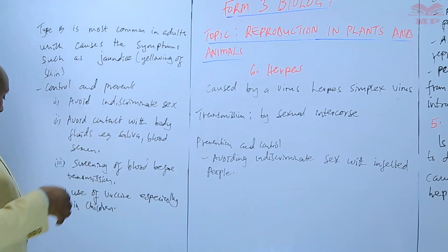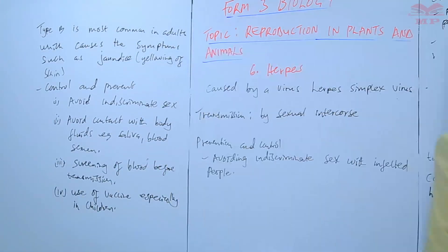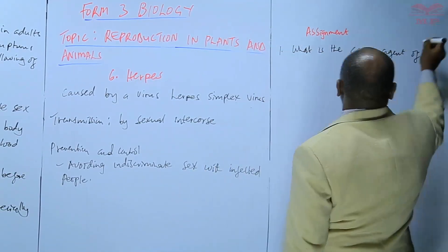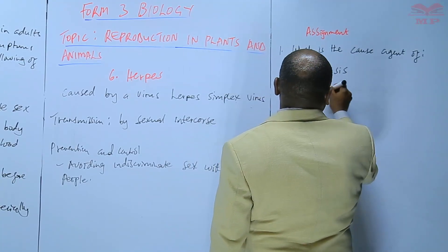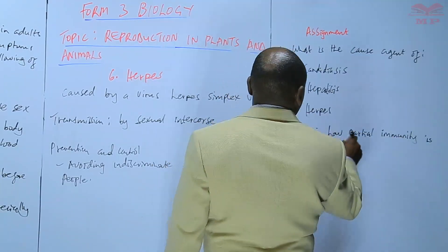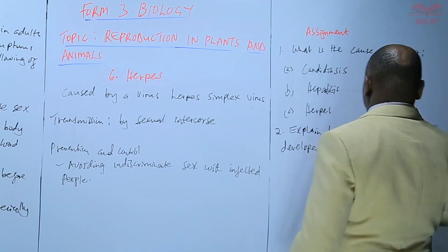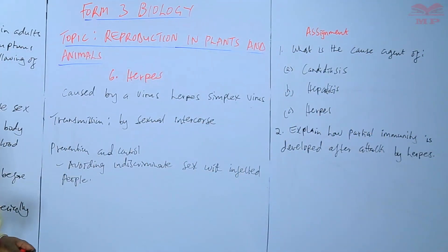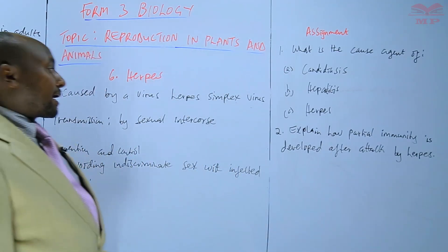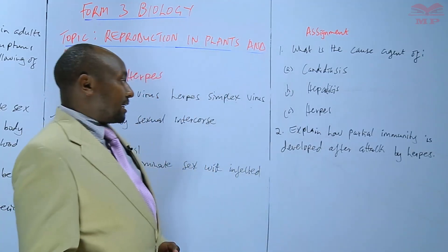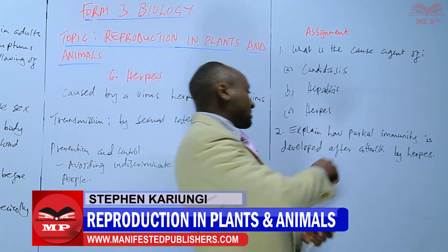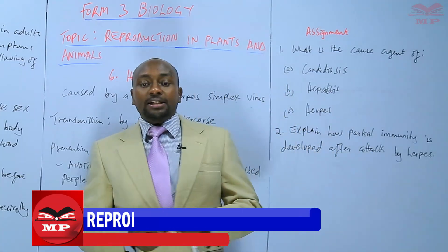Having looked at those diseases, the first question in the assignment is: what is the causative agent of (a) candidiasis, (b) hepatitis, and (c) herpes? And two: explain how partial immunity is developed after attack by herpes. We'll stop there until next time. Goodbye.